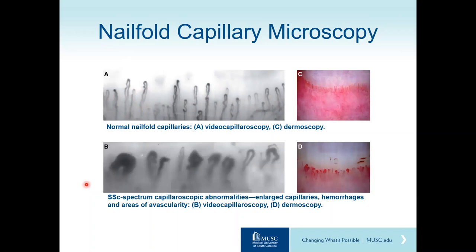In contrast, in a patient with scleroderma — which is a microvascular disease — the capillaries are greatly enlarged and there are areas of dropout or loss of capillaries. With the dermatoscope, some capillary loops appear larger than normal and there are areas of avascularity. Hemorrhage in the cuticular part of the nail is also often seen. This test is very useful in distinguishing scleroderma from a more benign condition such as primary Raynaud's phenomenon, and it is now part of the 2013 classification criteria.